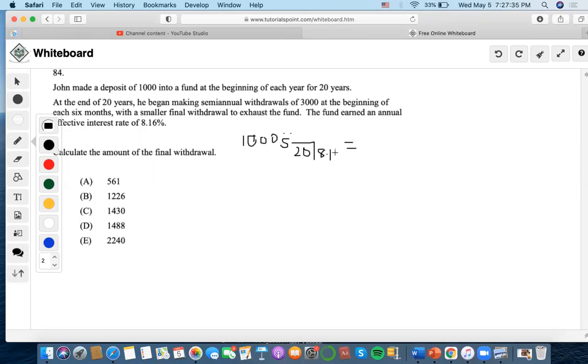So we know that the amount of this fund is this equation, and they said that they were withdrawing $3,000 at the beginning of each six months, and there's a final withdrawal to exhaust the fund. So this type of terminology is leaning towards the balloon payment slash drop payment concept.